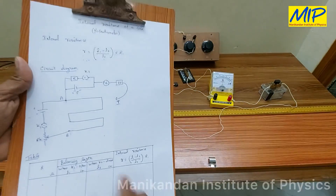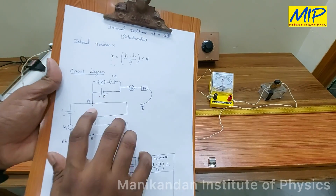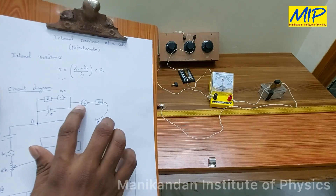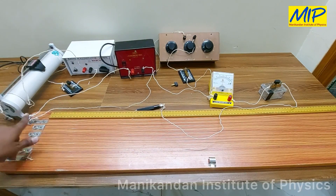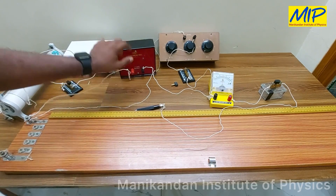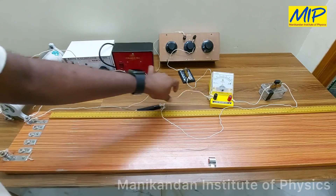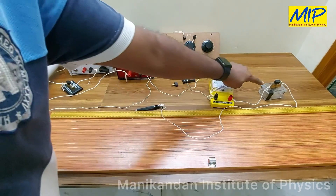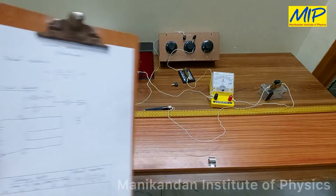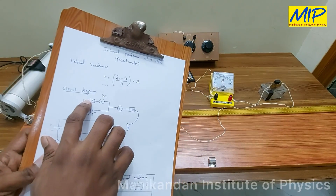Next, we connect the Leclanche cell whose EMF we want to find the internal resistance of. From point A it is connected with the positive terminal of the given cell. From the negative terminal of the Leclanche cell it is connected to the galvanometer, then to the high resistance, and from the high resistance to the jockey.